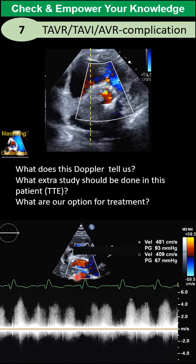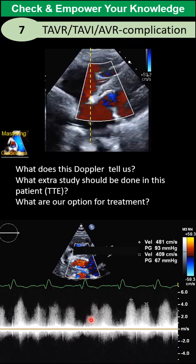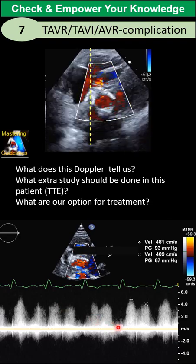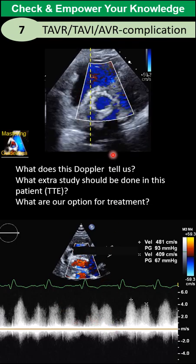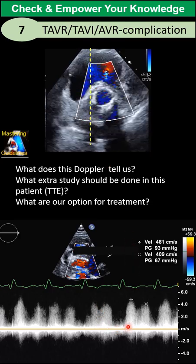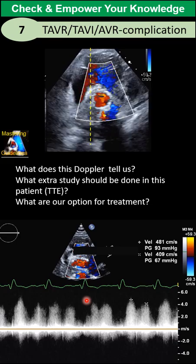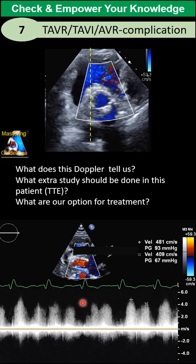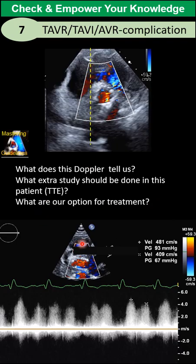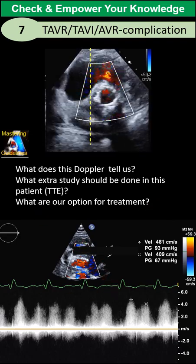Third, what extra study should we perform on the transthoracic echo — something we don't usually do, but in this case we have to? What should that be? And finally, what treatment options do we have for this case, given that a TEE will later be done to confirm our findings and evaluate in more detail for the treatment plan?